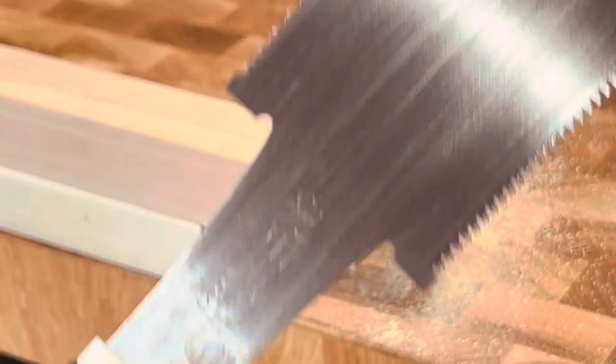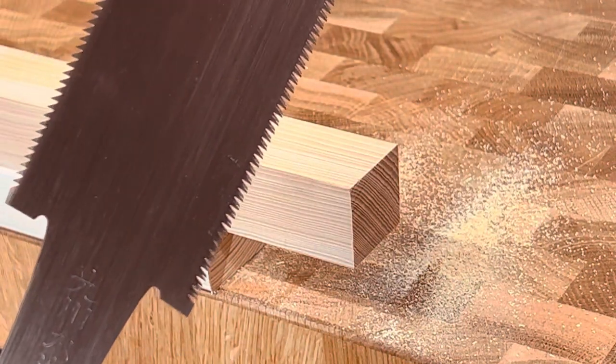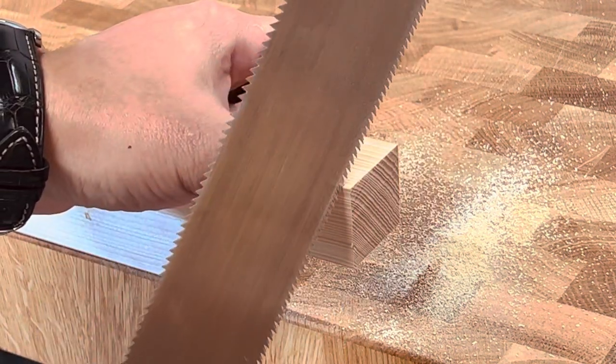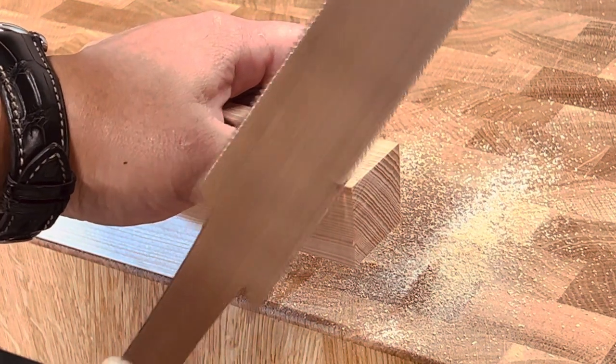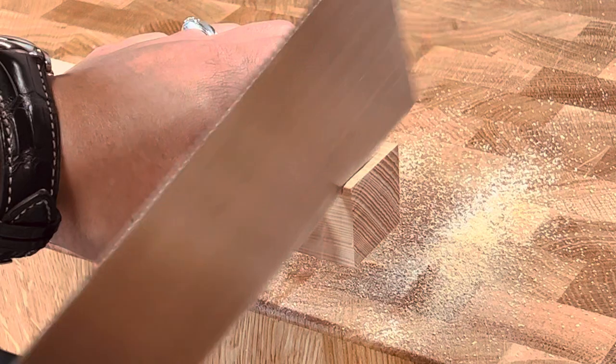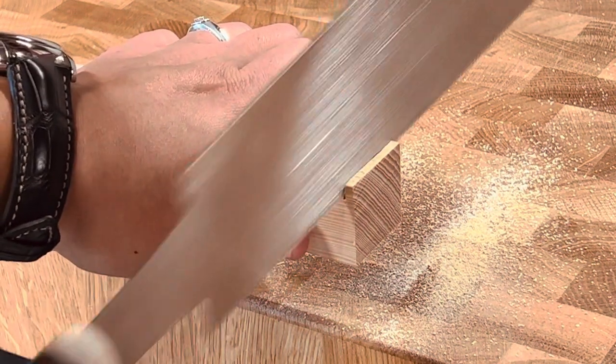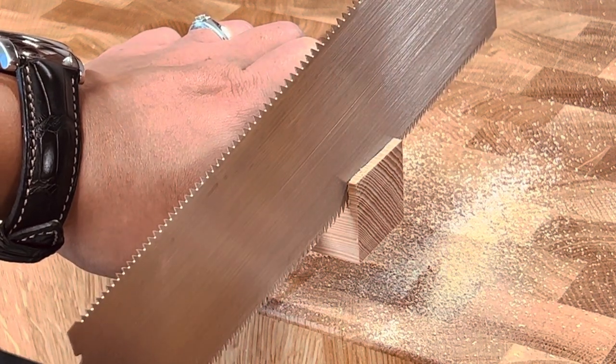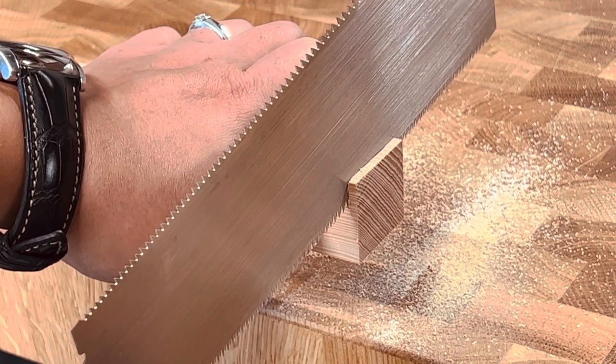So let's try with this saw to cut Japanese cypress, we call Hinoki in Japanese. So as always, it's better to make the forward cut first to make a slit. And use the full length of the blade, could make your cut very straight.